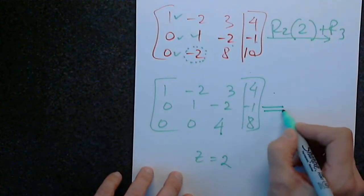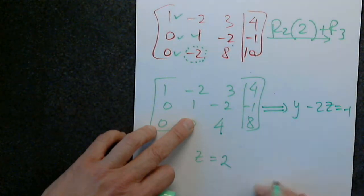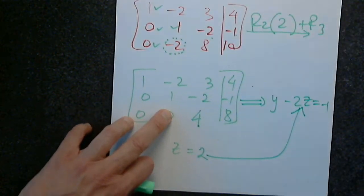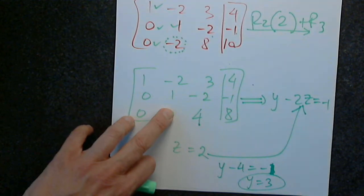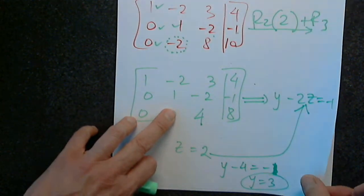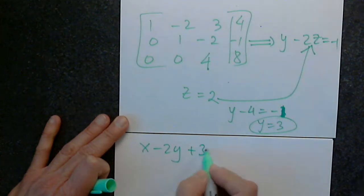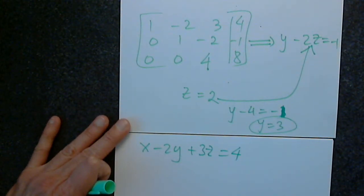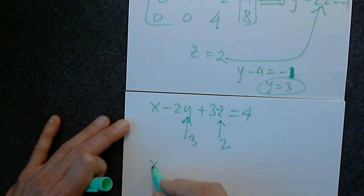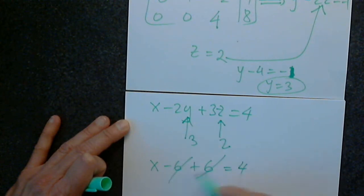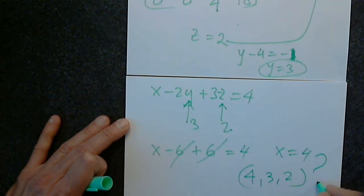If z equals 2, I create the equation from row 2: y minus 2z equals negative 1. Plugging in z gives y minus 4 equals negative 1, so y equals 3. Then going back to the first equation: x minus 2y plus 3z equals 4. Replacing z by 2 and y by 3 gives x minus 6 plus 6 equals 4, so x equals 4. The solution is (4, 3, 2) and we have to go back and check.